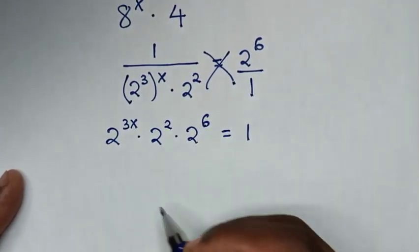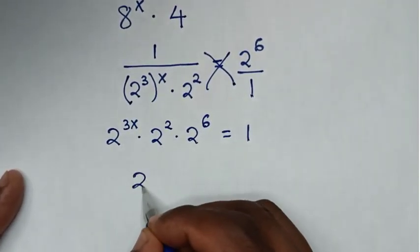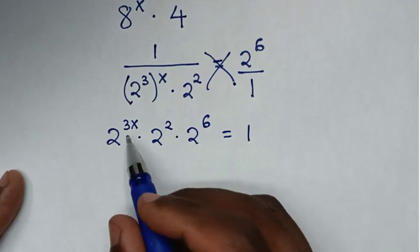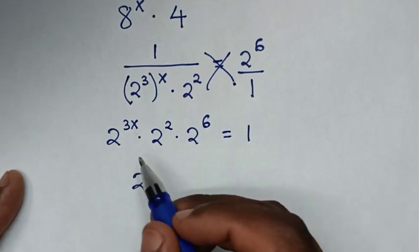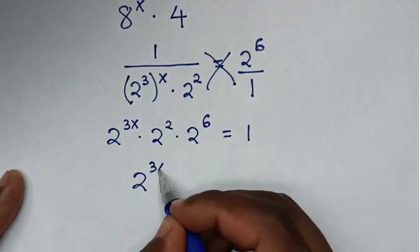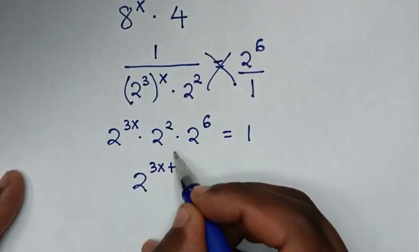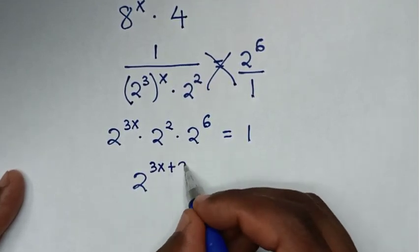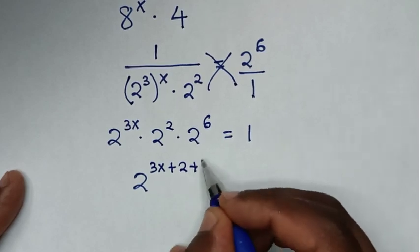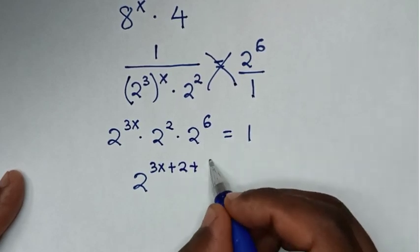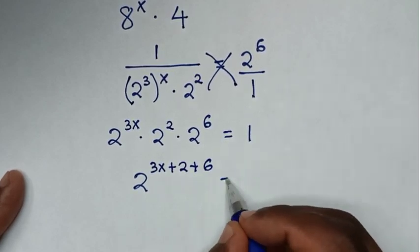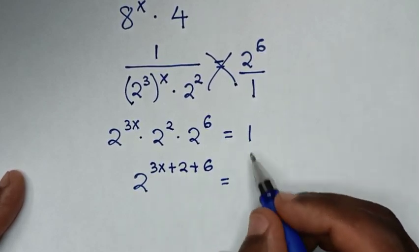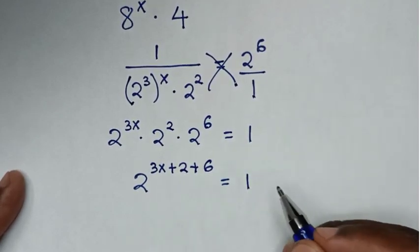Since all terms have the same base of 2, we add the exponents: 2 to the power of (3x plus 2 plus 6) equals 1.